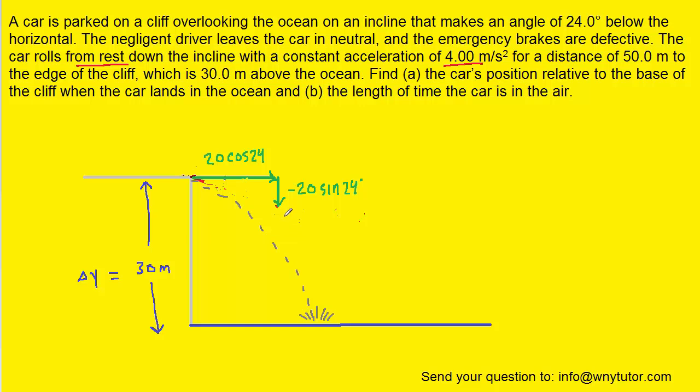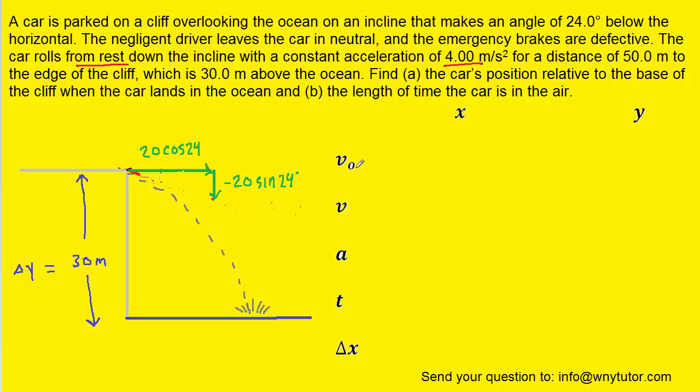Now that we have that accomplished, we can take a look at a projectile motion table. Along the left side of the table we have the initial velocity, final velocity, acceleration, time, and displacement, and then the x and y components of those values. We'll go ahead and plug in the x and y component of the initial velocity which we just determined.